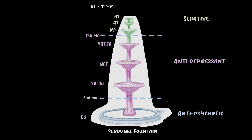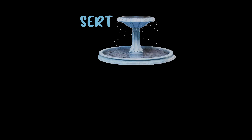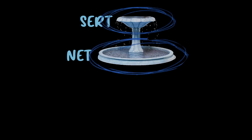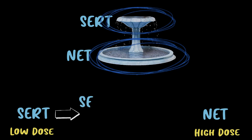For SNRIs we can think of a two-tiered fountain: the first tier fills up SERT (serotonin reuptake) and then it moves on to NET (norepinephrine reuptake). If the binding affinities were super far apart it would look like the fountain going from one tier, maxing out, then moving to the next. But since the affinities aren't that spaced apart, there's spillover into the next tier before the prior tier is filled. The key point is that SNRIs don't produce equal serotonin and norepinephrine reuptake at all doses — it's sequential, with level one being serotonin and level two being norepinephrine reuptake.